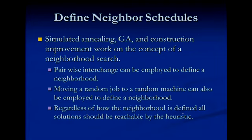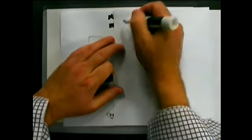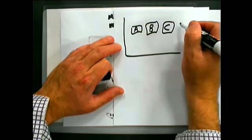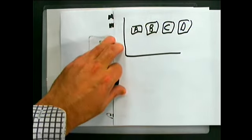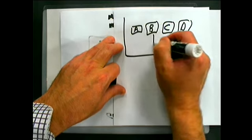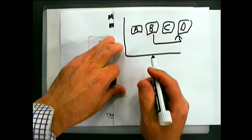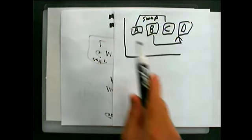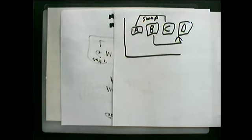Both simulated annealing and genetic algorithms work on the concept of neighborhood search. For scheduling, this is fairly easy — you typically define the neighborhood based on pairwise exchange or moving a single job. So I could have my schedule here on a single machine with hundreds of jobs. A neighborhood could be: I randomly pick a job and insert it somewhere else in the schedule. Or I could do a swap — if I swap A and C, my new schedule would be C, B, A, D instead of A, B, C, D.